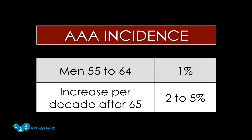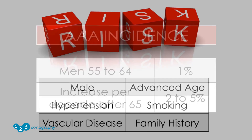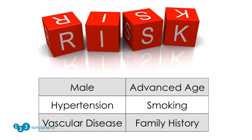Abdominal aortic aneurysm has an increasing incidence in our aging population. In patients over 65, as many as 1 in 20 will have this disease. Risk factors include male gender, advanced age, hypertension, smoking, a history of vascular disease, and a family history of aortic disease.